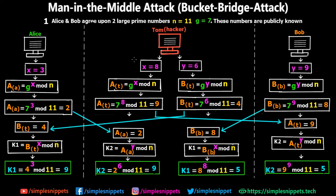Now let's see how the attack works. There is a diagram on screen — it might seem a little confusing, but I'll explain step by step. Step one: Alice and Bob agree upon two large prime numbers. For calculation purposes we're taking n=11 and g=7 respectively, and these numbers are publicly known. So Alice, Bob, and even Tom — the hacker in the middle — all know n and g.